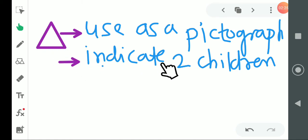One triangle what is it indicating? What is it showing? Indicating, two children. Okay?